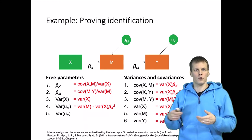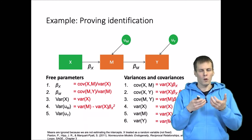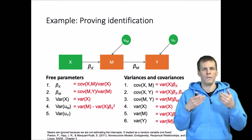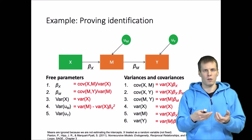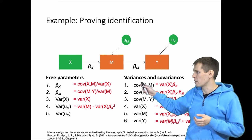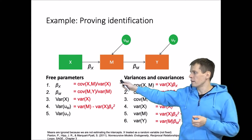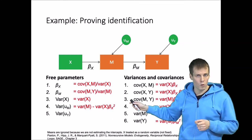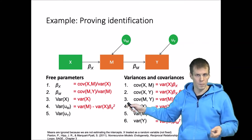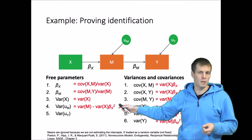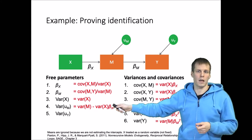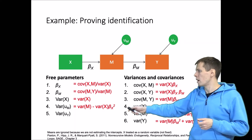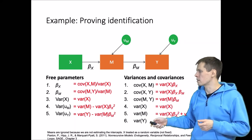The idea of showing identification using this technique is that after you have shown that one parameter has been identified — like we identified beta_X first — you can then use that identified parameter to show that another parameter is identified. Beta_X squared can be used in subsequent equations because we have already identified it, and the variance of Y is calculated the same way.